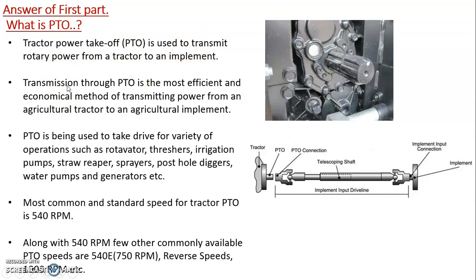Transmission through PTO is the most efficient and economical method of transmitting power from an agricultural tractor to an agricultural implement. There are different points from where power can be taken from a tractor — for example, you can attach a cultivator or MB plow through the three-point linkage — but those methods have more power losses. Taking drive from PTO results in the least power loss. Tractor PTO is used for a variety of agricultural operations such as rotavators, threshers, irrigation pumps, straw reapers, sprayers, post-hole diggers, water pumps, and generators, etc.